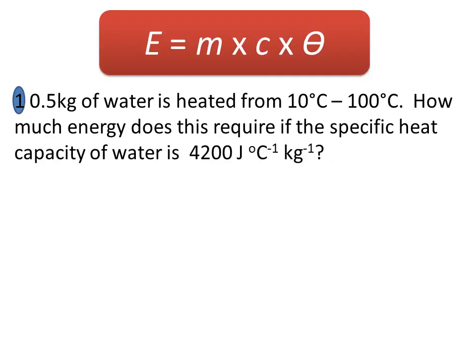So let's have a problem. We've got half a kilogram of water heated from 10°C to 100°C. How much energy does this require if the specific heat capacity of water is 4200? So quite straightforward this one. You're just going to take the mass times the specific heat capacity times by theta, which is the temperature difference.